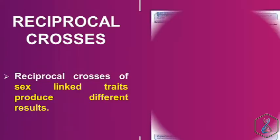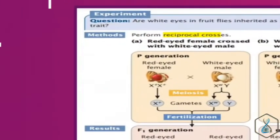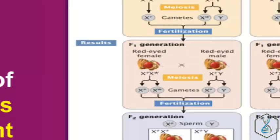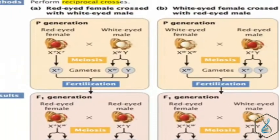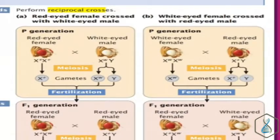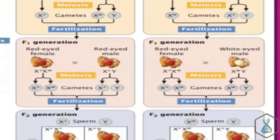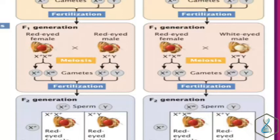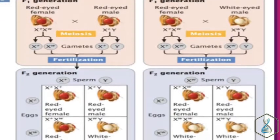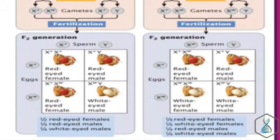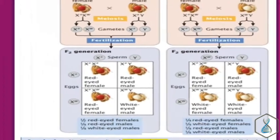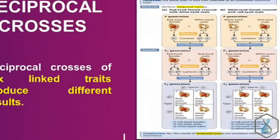For example, when we cross a red-eyed female with a white-eyed male, all F1 offspring show red eye color. But when we take the reciprocal — crossing a white-eyed female with a red-eyed male — the F1 shows a 1:1 ratio of red to white. F2 also gives different results: from the first cross, F2 shows three red to one white; from the reciprocal cross, F2 shows two red and two white. This reveals that different results from reciprocal crosses indicate a sex-linked trait.